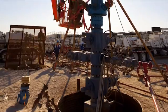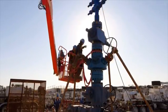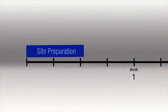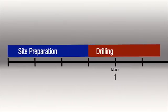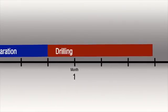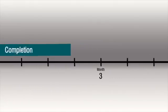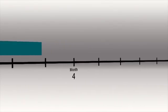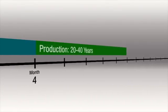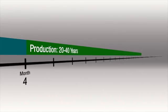The whole process of developing a well typically takes from three to five months: a few weeks to prepare the site, four to six weeks to drill the well, and then one to three months of completion activities, which includes one to seven days of stimulation. But this three to five month investment can result in a well that will produce oil or natural gas for 20 to 40 years or more.